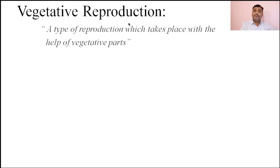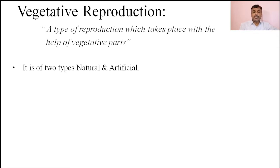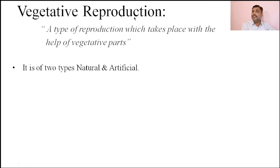Now we will discuss another method of asexual reproduction carried out in some advanced members, especially different types of gymnosperms and angiosperms. That type of reproduction is known as vegetative reproduction. A type of reproduction carried out with the help of different types of vegetative parts. Vegetative parts are the parts of the plant that do not directly participate in sexual reproduction, but participate in growth and development. Those parts — roots, stem, and leaves — are called vegetative parts.